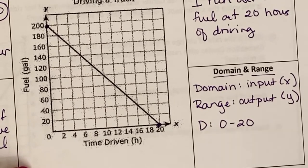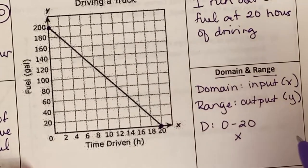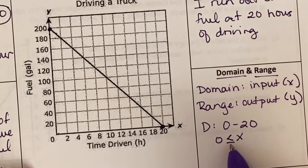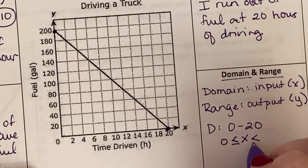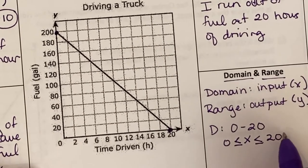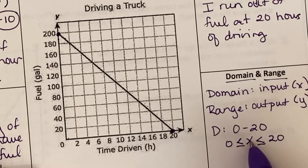The more technical mathematical way of writing this is I would write my x-value has to be greater than or equal to 0. It has to be equal to 0 because 0 is included. And it is less than or equal to 20 because 20 is included. So this would be the mathematical way of writing that domain—all of my possible x-values.